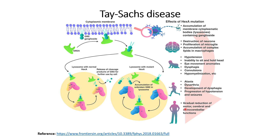This leads to several problems, as mentioned on the right side. The most frequently observed problems are reduction in motor or movement function, cerebral function related to the brain, and spinal or cerebellar functions related to the nervous system. The accumulation of membrane cytoplasmic bodies containing gangliosides in the lysosome disrupts neurons and may even cause problems at the retina, as swelling of the retina can occur because of the stretched lysosome.